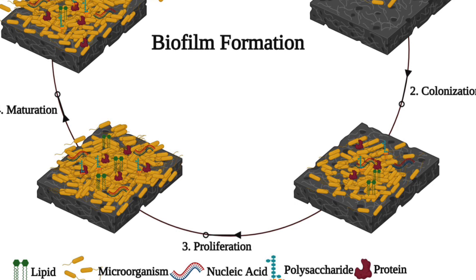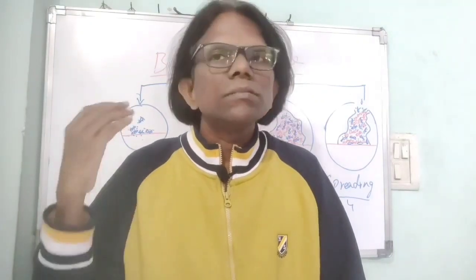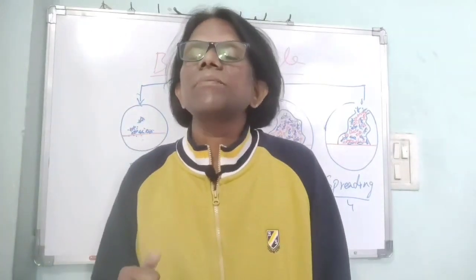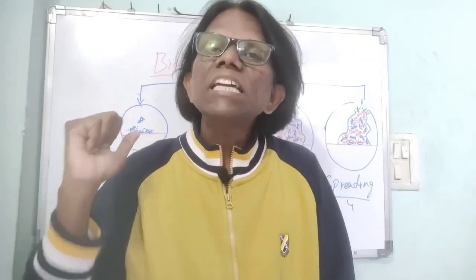Biofilm formation requires moisture, nutrients, and surfaces — including natural materials, polythene, wood, glass, and rubber. The adverse effects of biofilm in the food industry include foodborne illness and pathogen outbreaks, product recalls and loss of consumer confidence, and corrosion of metal equipment such as stainless steel and other metal surfaces.